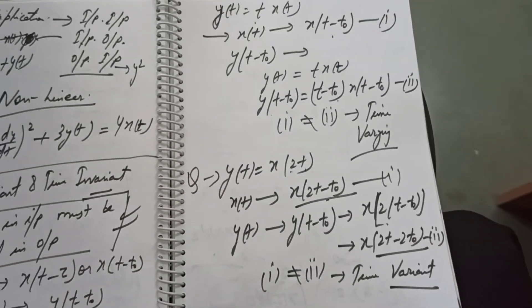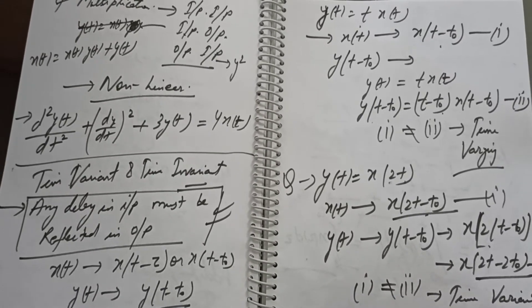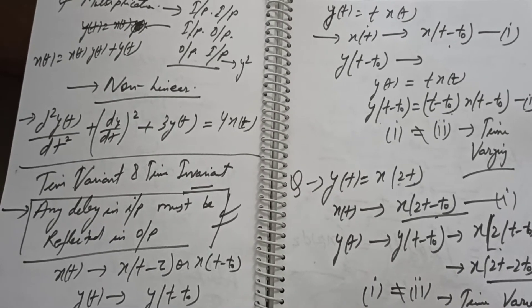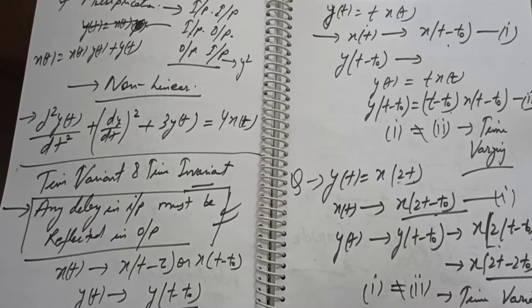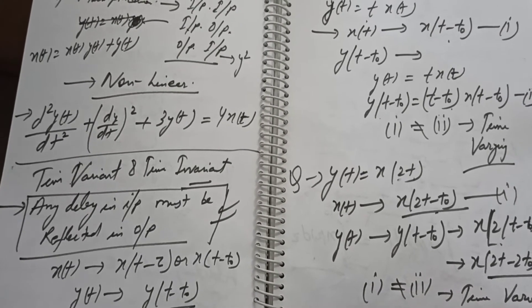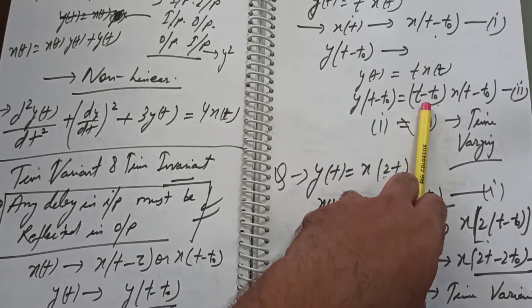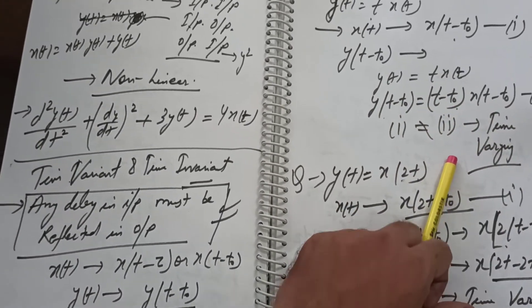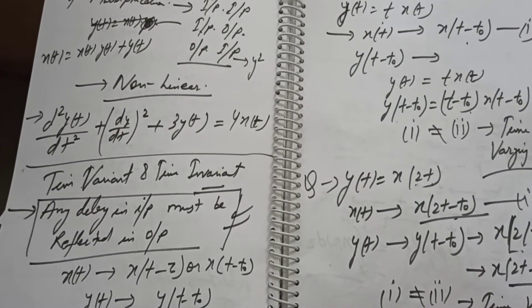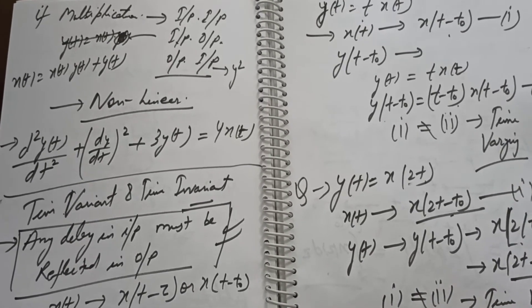Consider the system y(t) = t·x(t). If we shift the input x(t) by t-naught, the shifted input becomes t·x(t minus t-naught). However, y(t minus t-naught) means that (t minus t-naught) gets replicated in t, so the output becomes (t minus t-naught)·x(t minus t-naught). Comparing the two: the shifted output is (t minus t-naught)·x(t minus t-naught), while the shifted input response is t·x(t minus t-naught). They are not equal, so this system is time-variant.